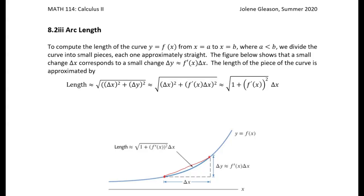We're going to use integrals to compute arc length. If you look at the approximation of the length of the curve between two given points, if you take this curve that's drawn down here, then the length of the curve — just the length of the segment connecting the points on that curve — would just be the square root of the change in x squared plus the change in y squared. That's just based on the Pythagorean theorem. And then if we know the slope of the curve, we can do a linear approximation to get that delta y.